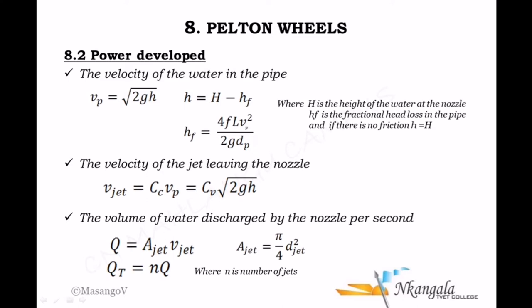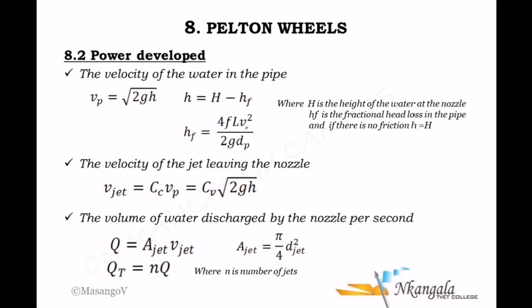To convert potential energy to kinetic energy, we use the equation derived by setting Ek at the bottom equal to Ep at the top. Cancelling the masses gives half v squared equals gh, and rearranging gives v equals the square root of 2gH. This equation gives the velocity of the water inside the pipe. The H used here is the height difference between the water in the reservoir and the water at the bottom of the pipe. When there is pipe friction, this height is reduced.